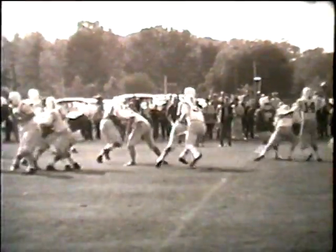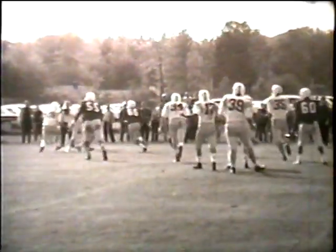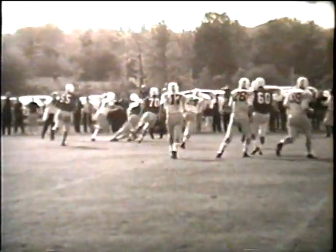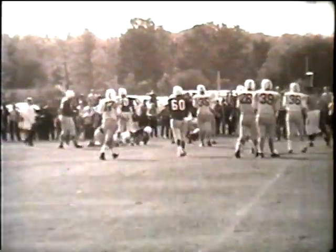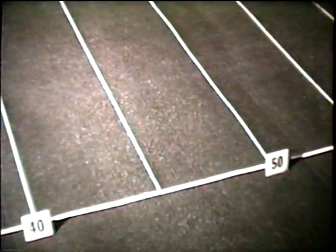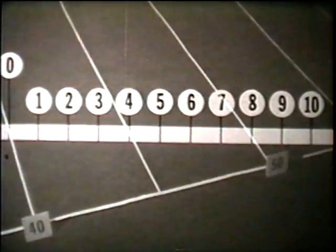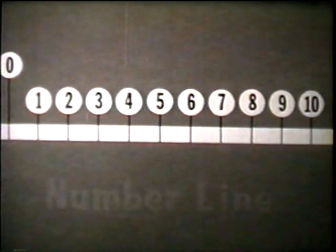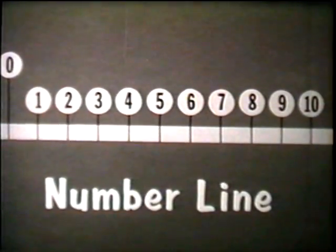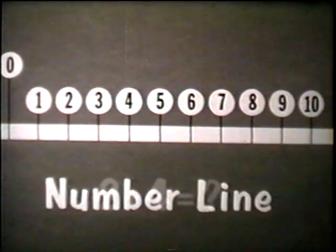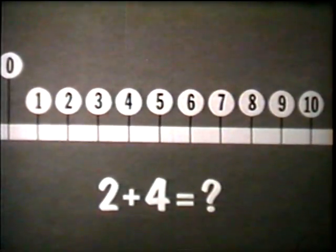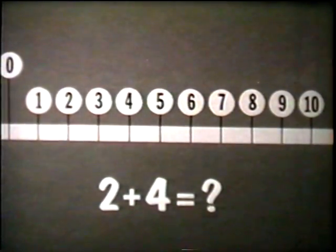Now let's go back to the football game for a moment and think about the counting numbers used in arithmetic. We can picture numbers such as these as corresponding to points on a line. To illustrate the use of this number line, we can do some very simple arithmetic operations. To show two plus four, we count off two units, then four more.